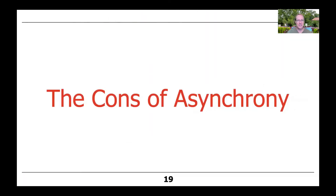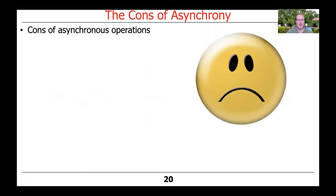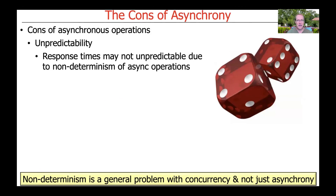Of course, you don't always get everything for free — there are some downsides with asynchrony. One downside is that computations become less predictable, because asynchronous operations are designed to run in the background. You don't have a simple request-response manner where you invoke a call, wait, and get a result. You start running calls in the background and they take however long they take, so things may end up taking different amounts of time and may occur in different orders.